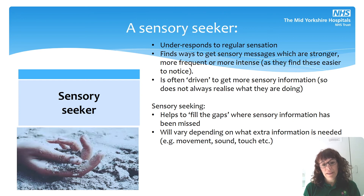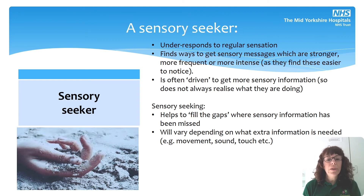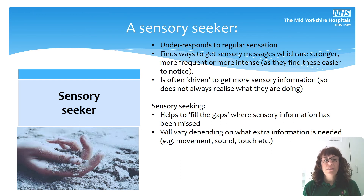For example, if they're not getting enough information about movement, that person is going to be very active and on the go. If someone's not getting enough information about sound, they're going to find their own ways to make more noise — they might hum or make noise in other ways. People who don't get enough information about touch are going to need to touch everything as well as look at it, and seek out lots of touch experiences.